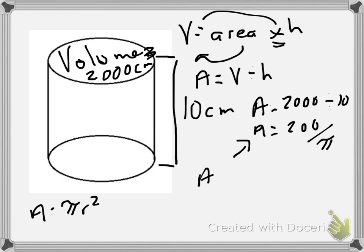So if we take area equals 200 divided by π, which is 3.142 in this class, we are going to end up with a number that is 63.65.